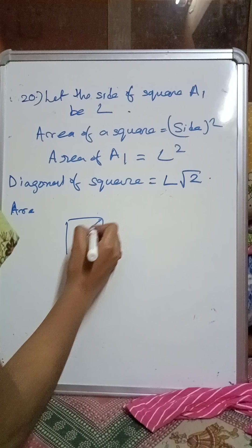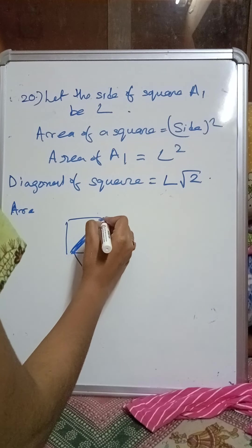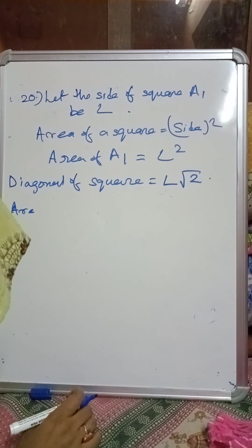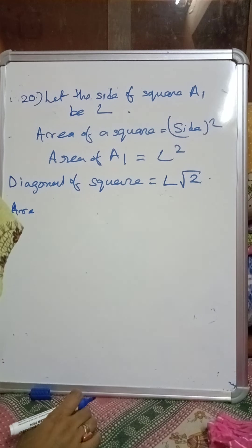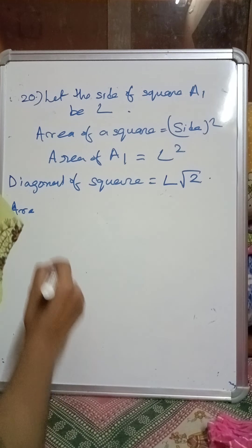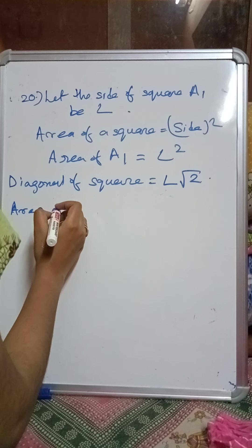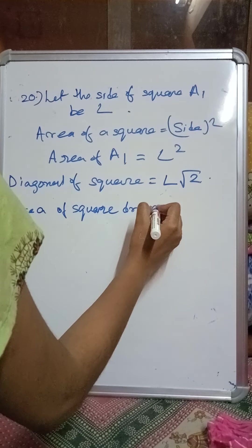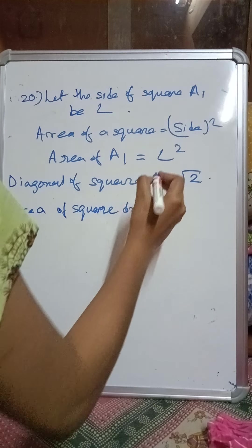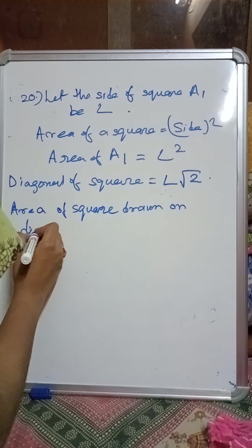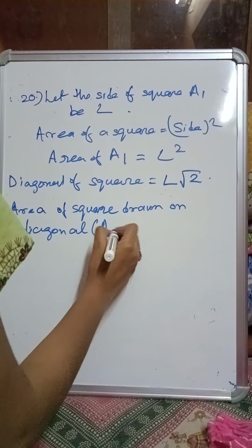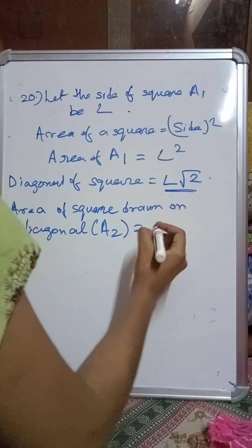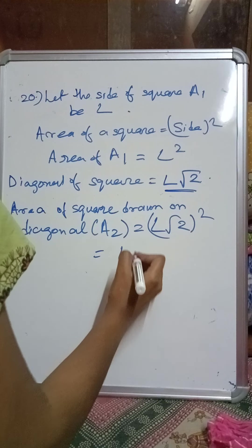A new square has been drawn on this diagonal. The area of the square drawn on the diagonal — they have named it A2 — equals side squared, where the side is now L root 2. So A2 = (L root 2) whole squared = L squared × root 2 × root 2 = 2L squared.